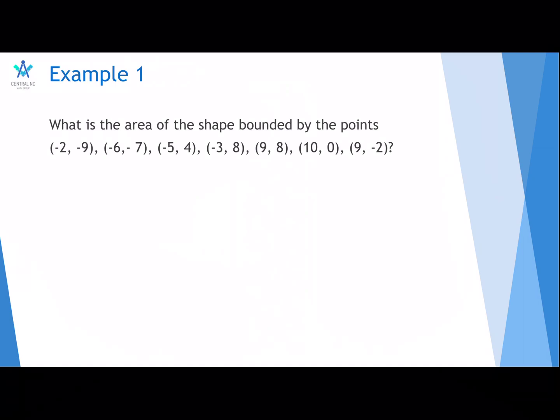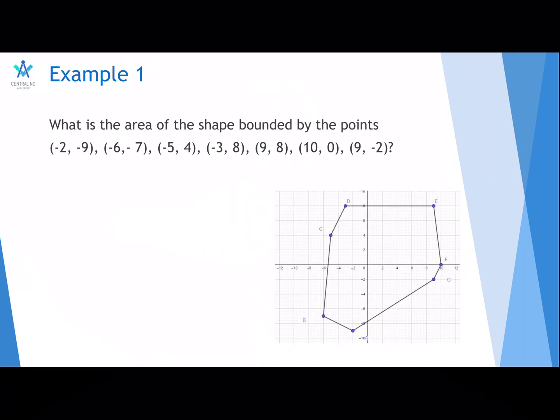Here's the first example. What is the area of the shape bounded by the points (-2, -9), (-6, -7), (-5, 4), (-3, 8), (9, 8), (10, 0), and (9, -2). So, here is a diagram.